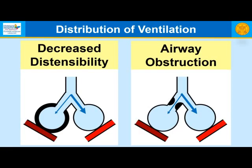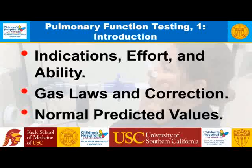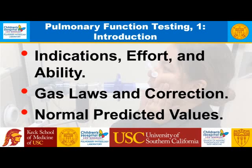To remind you, when we talked about pulmonary mechanics, there are only two things that alter the distribution of ventilation within the lungs: areas of lung where there's decreased distensibility, and areas of lung where there is airway obstruction. Today we're going to talk about indications, effort, and ability with respect to pulmonary function testing, gas laws and correction, and normal predicted values.